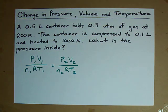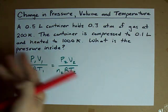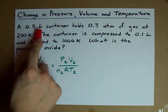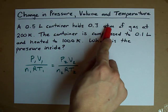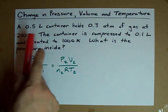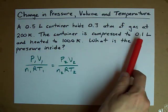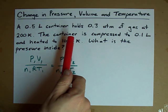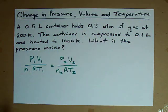I want to do an example of a problem where pressure, volume, and temperature are all changing. Here, we've got a 0.5 liter container containing 0.3 atmospheres of gas at 200 Kelvin. If that container is compressed to 0.1 liters and heated to 1,000 Kelvin, what's the new pressure?